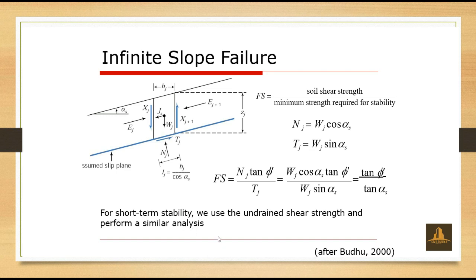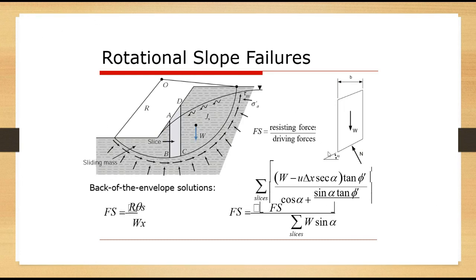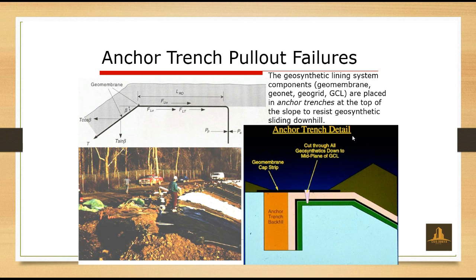For short-term stability, we use the undrained shear strength and perform a similar analysis. For rotational slope failure, the factor of safety FS equals resisting force divided by driving force. The geosynthetic lining system components — geomembrane, geonet, geogrid, GCL — are placed in anchor trenches at the top of the slope to resist geosynthetic sliding downhill. You can see the anchor trench backfill, geomembrane cap strip, and cut-through all geosynthetics down to the mid-plane of the GCL.